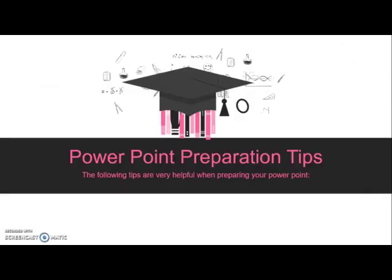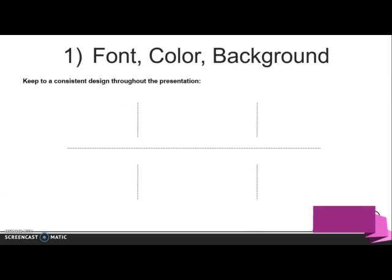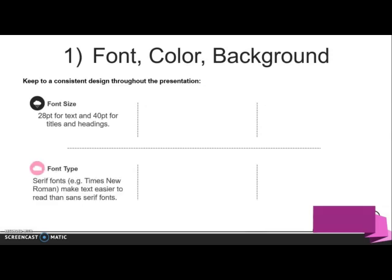Now let's continue with PowerPoint preparation tips. The following tips are very helpful to consider when preparing your PowerPoint for a research or project presentation. The first is font, color, and background — try to be consistent throughout your presentation. For font size, use 28 for text and 40 for titles. For font type, use fonts like Times New Roman because it is easier to read. Don't use decorative or script fonts.